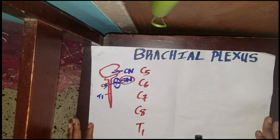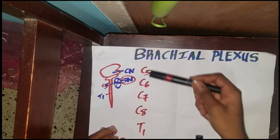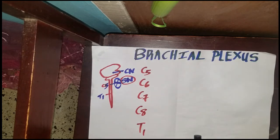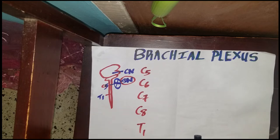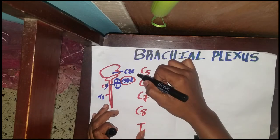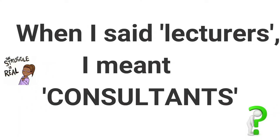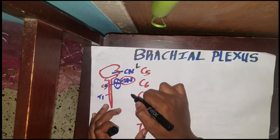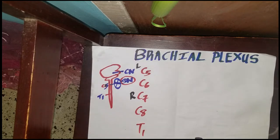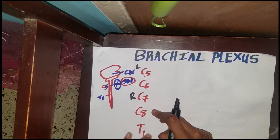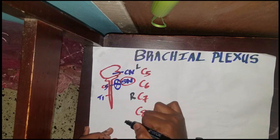So remember, the brachial plexus is from C5 to T1. I'm going to use an analogy to help remember this. C5 and C6 are like the lecturers. C7 is the resident — after they graduate and do internship they become residents. And C8 and T1 are like the medical students.